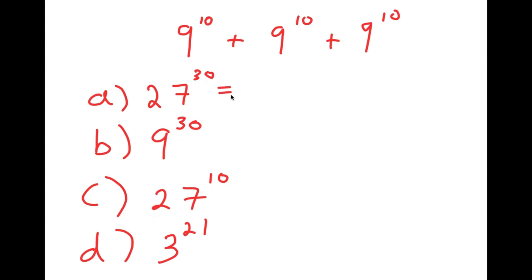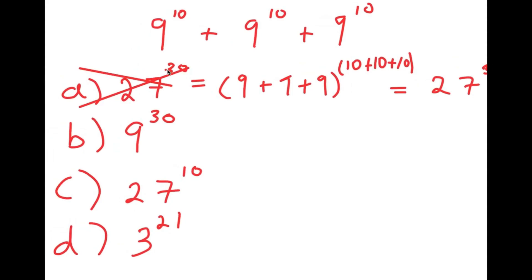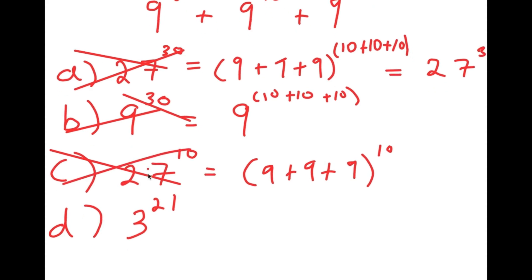We first have A: 27 to the power of 30. This was likely resulted from adding all the bases and adding all the exponents — 9 plus 9 plus 9 to the power of 10 plus 10 plus 10 equals 27 to the power of 30. This is actually wrong because that is not the proper way to add exponents. Option B, 9 to the power of 30, was likely gotten by keeping the base the same and adding the exponents — again wrong. Option C, 27 to the power of 10, was gotten from adding the bases but keeping the exponent the same — also wrong. That's not how you add exponents.